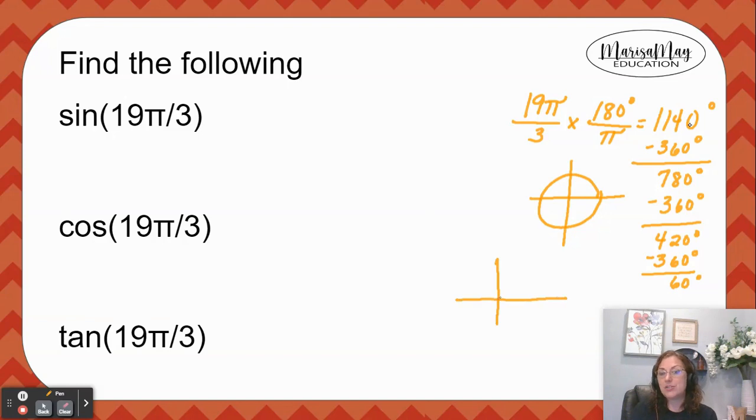So let's just draw an angle in the first quadrant with 60 degrees, since that's where it would land. Now think about your special right triangles, you have a 30-60-90 special right triangle.